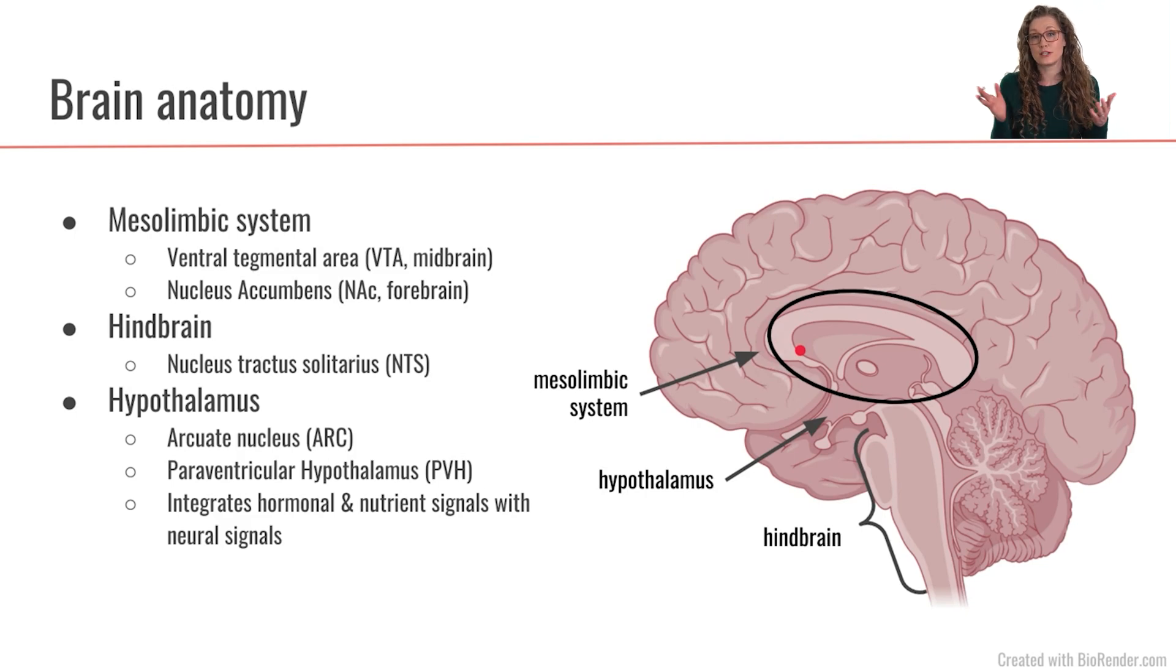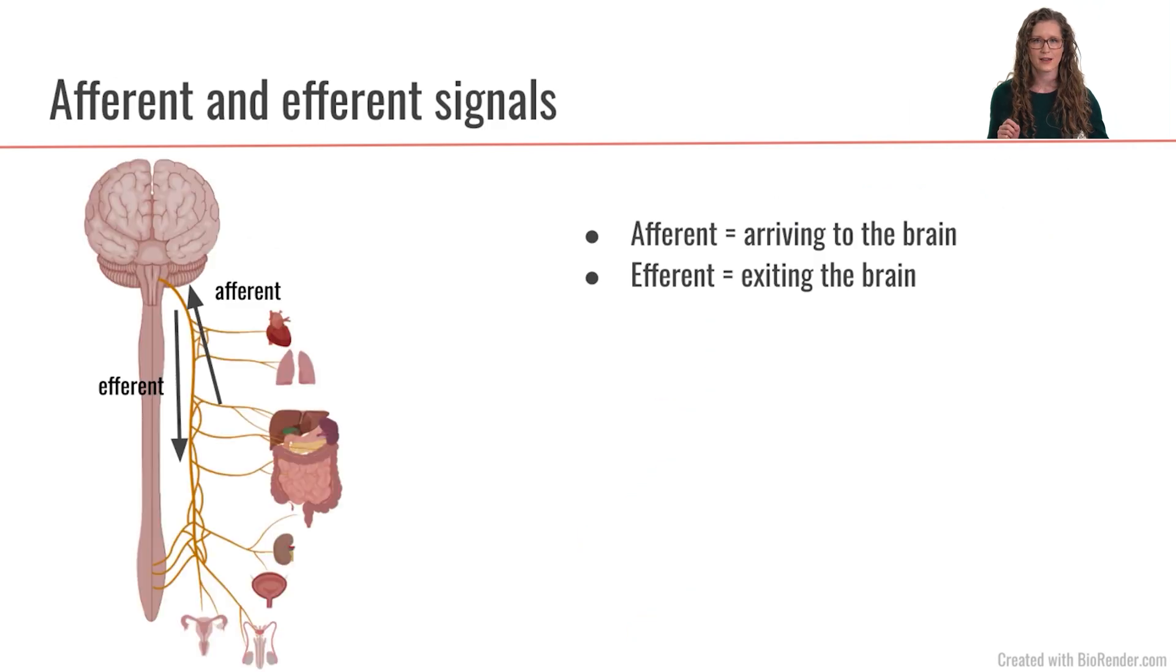And then the other region of the brain that we're going to talk about is the hindbrain. So this whole area back here is the hindbrain, which has a lot more responsibility for some autonomic, automatic types of responses. And the particular area we're going to focus on within the hindbrain is called the nucleus tractus solitarius. That's going to be a region in here. So hindbrain, hypothalamus, mesolimbic system. We're going to dig into a few specific nuclei within each of these areas.